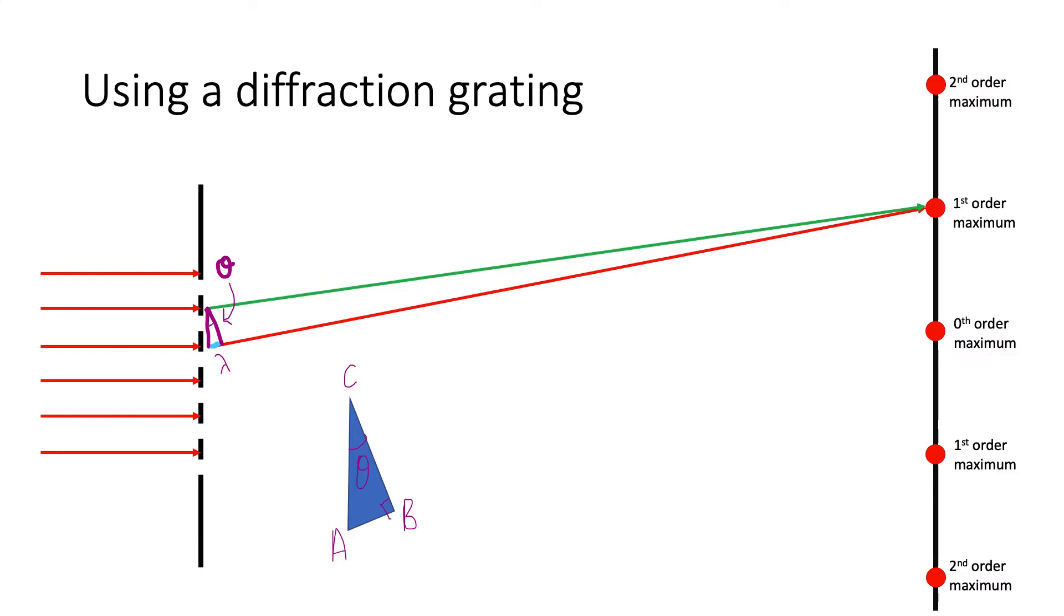If I just enlarge that diagram. On that diagram, AB is the wavelength of the light, because this is the first order maximum in that equation, AB equals n lambda, n is one. So AB equals lambda. And AC is the distance between the slits d. We know that because it tells us on the diffraction grating. So with a bit of simple geometry, sine theta equals lambda over d. So if we knew what theta was, we know what d is, then we could use that to calculate the wavelength of this light. The general equation you need to know is d sine theta equals n lambda.